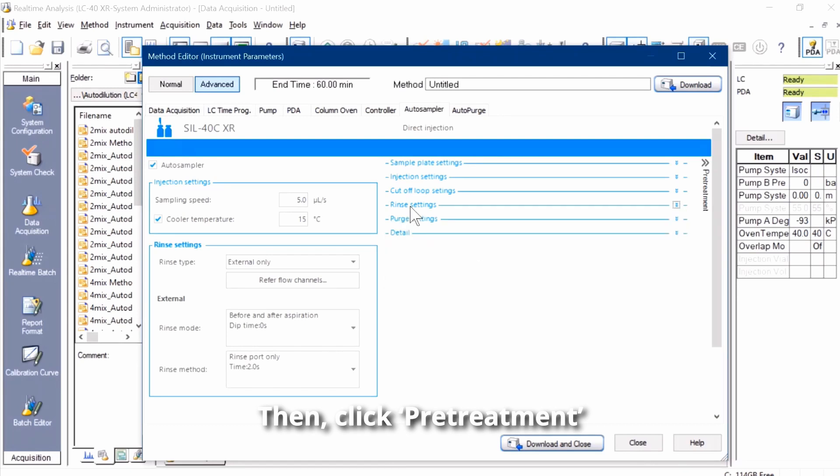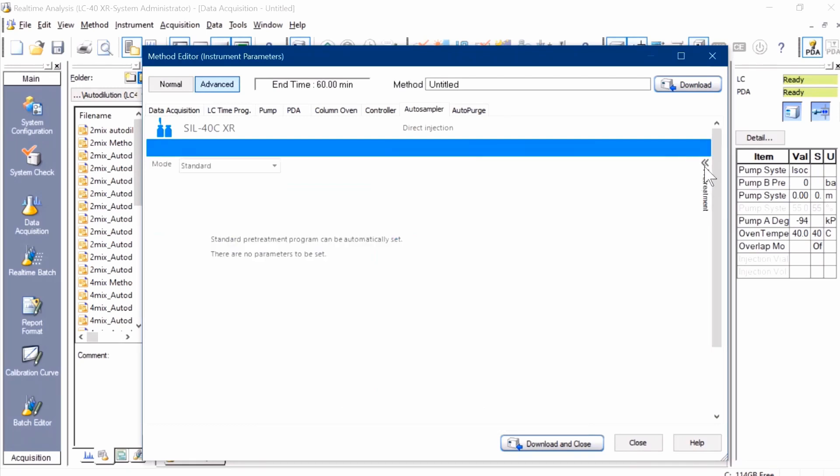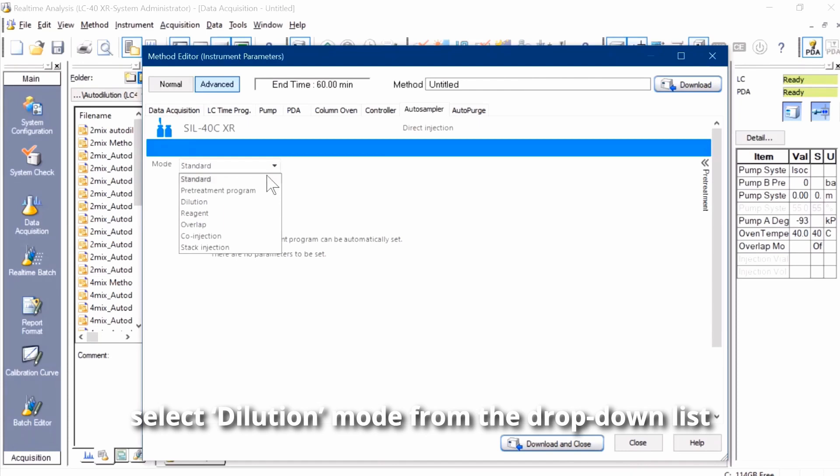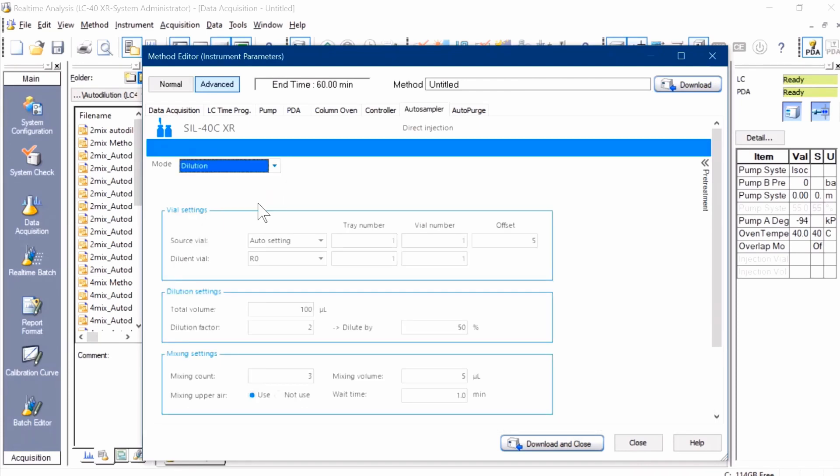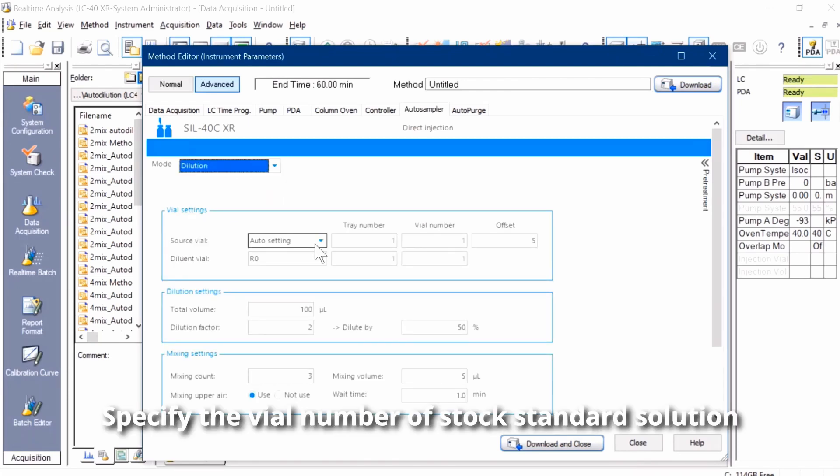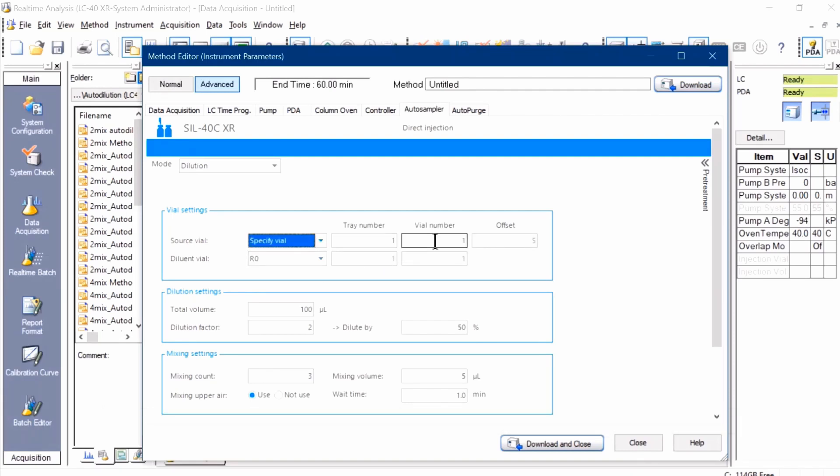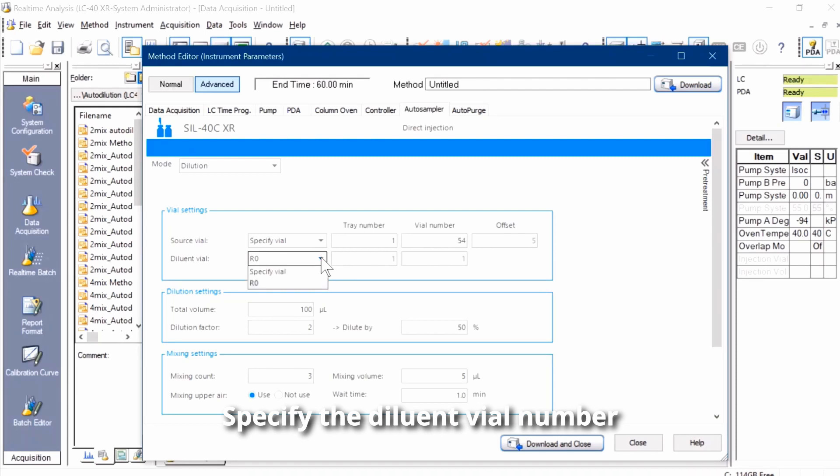Then click Pre-treatment, select dilution mode from the drop-down list. Specify the vial number of stock standard solution. Specify the diluent vial number.